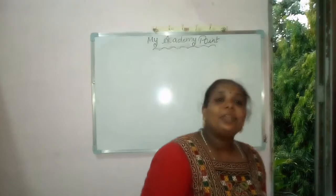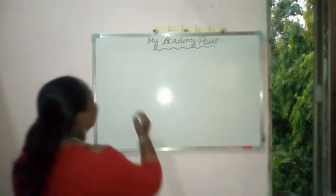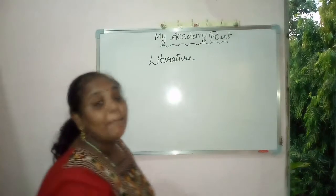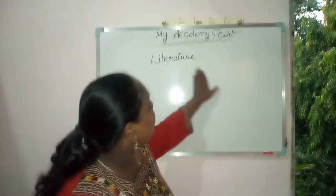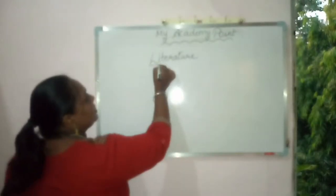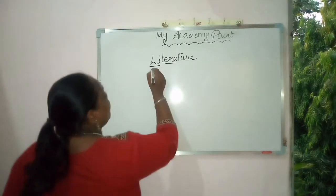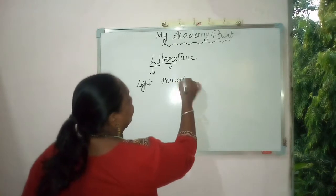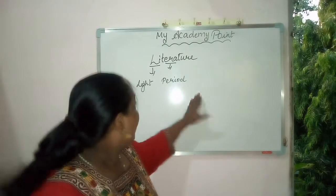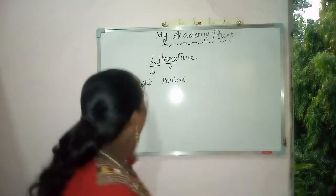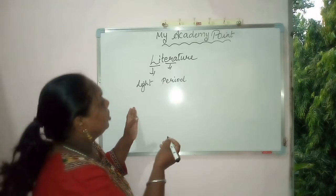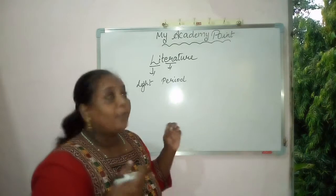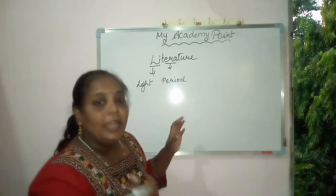What do you mean by the literature part? First I will explain what is literature. In the word literature, 'lit' is there and 'era' is there. 'Lit' means light, and 'era' means a period of time. So literature is the knowledge from a period of time — things like novels, drama, prose, and poetry. All these fictions are known as the literature part.